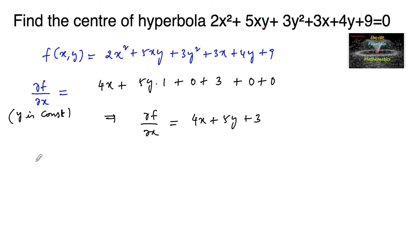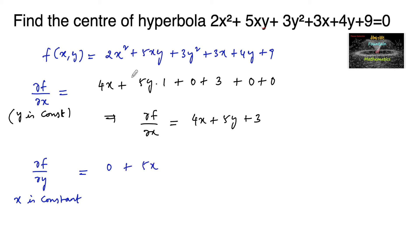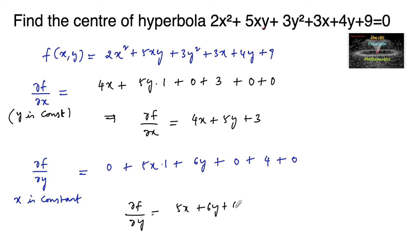Now partially differentiate with respect to y. When doing partial differentiation with respect to y, we treat x as a constant. So 2x² differentiation is 0, 5xy — with 5x as constant — gives 5x, 3y² gives 6y, 3x gives 0, 4y gives 4, and 9 gives 0. So ∂f/∂y = 5x + 6y + 4.